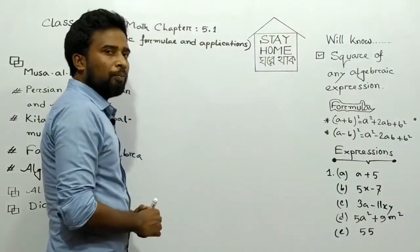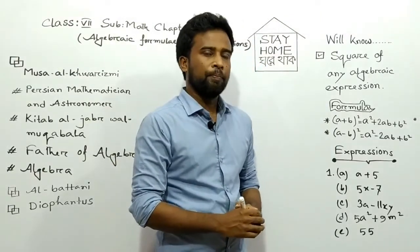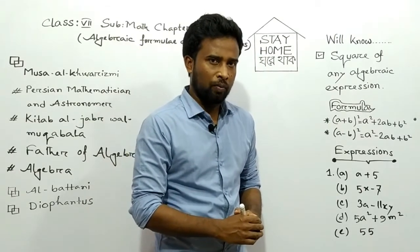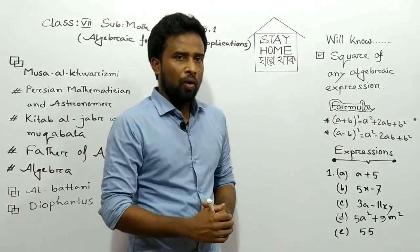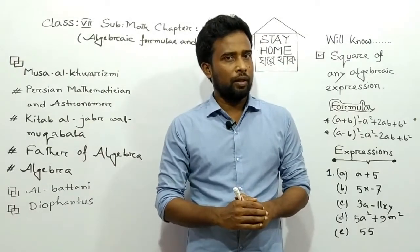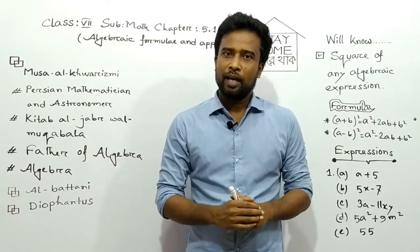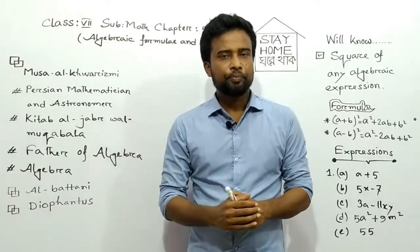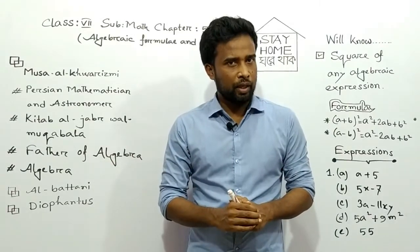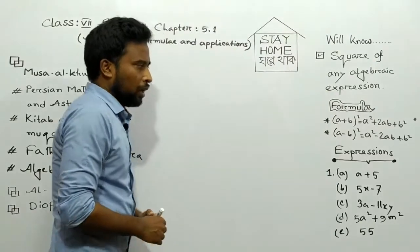At the end of today's discussion, you will be able to know how you can find the square of any algebraic expression by the appropriate formula. You can see here two formulas: one is (A + B)² and another is (A − B)². A plus B whole square equals A squared plus 2AB plus B squared, and A minus B whole square equals A squared minus 2AB plus B squared. You can see here five algebraic expressions. Let's start.